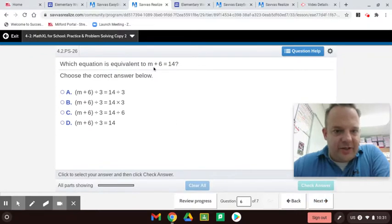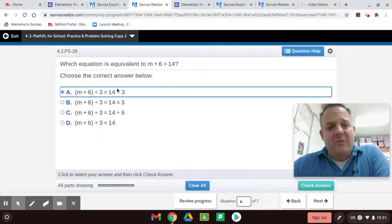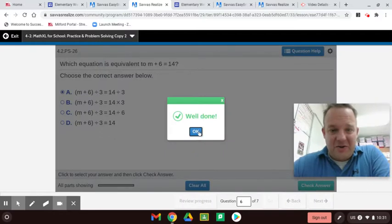Which equation is equivalent to m plus six equals 14? All right, so m plus six, and here's 14. They divide it by three, divide it by three. So it could be that one. But look at this one. They divide it by three and then times three. No, divide it by three and then divide it by six. No, whatever you do on one side, you have to do on the other. Here, they just divide it by three on the left side, but not the right. So whatever you do on one side, you have to do on the other side for algebra. Remember that.